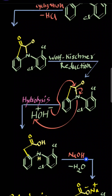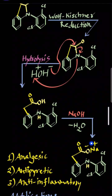Finally, the sodium salt is formed by reacting this compound with NaOH. The OH and H react, H₂O is eliminated, and the oxygen gets the Na⁺. This is your final product — diclofenac sodium.